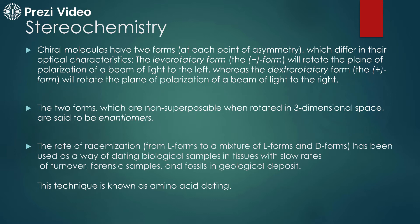The L enantiomeric form means 'left' — it turns the plane of polarization of light to the left. The dextrorotatory form rotates the plane of polarization of light to the right. The L form is represented by the minus sign and the D form is represented by the plus sign. These two forms are non-superimposable, and when rotated in three-dimensional planes they are known as enantiomers.